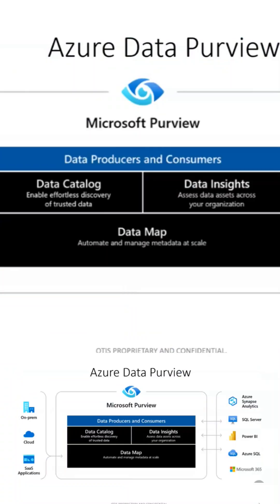Azure Purview is a data governance tool which provides features to protect your data whether it is sitting on-premises or on the cloud, whether it is on AWS, Azure, or GCP. It tries to have a centralized controlling mechanism to identify which is the sensitive data, what classification of data is being saved, and how it has to be encrypted or protected. All these insights will be given by Azure Data Purview, so you can have a single dashboard where you can monitor and govern all your data.